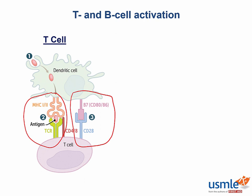After both signals are received, helper T cells are able to secrete cytokines, while cytotoxic T cells are able to destroy infected cells in order to control replication.